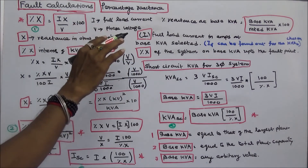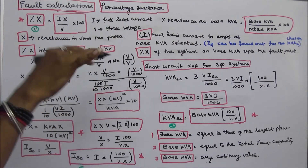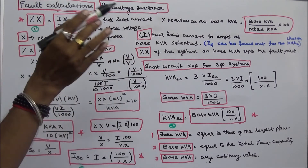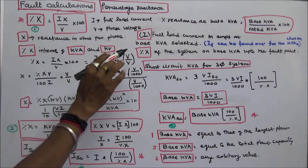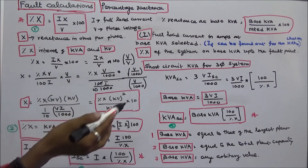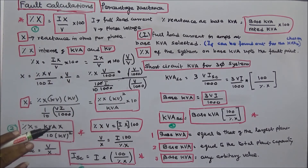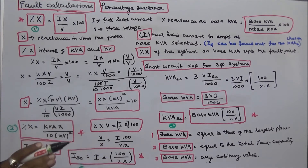Percentage reactance on base KVA equals base KVA divided by rated KVA, multiplied by 100. This gives the percentage X of the system on base KVA up to the fault point. So ISC equals I times 100 divided by percentage X.